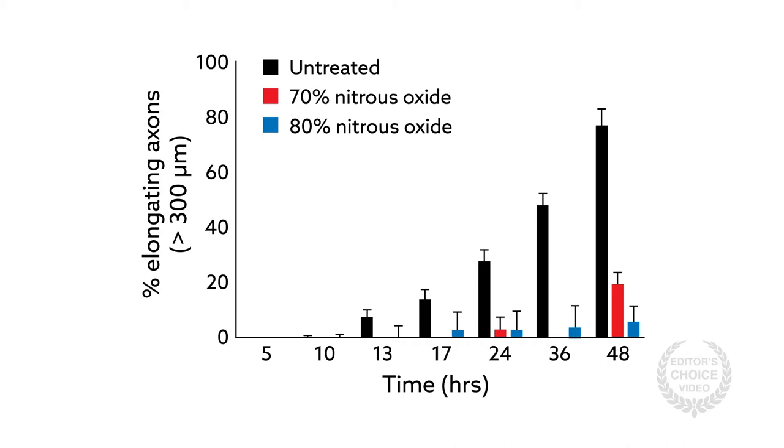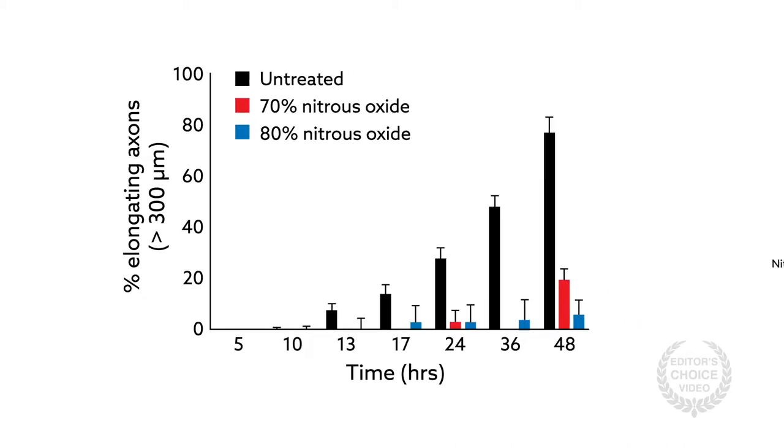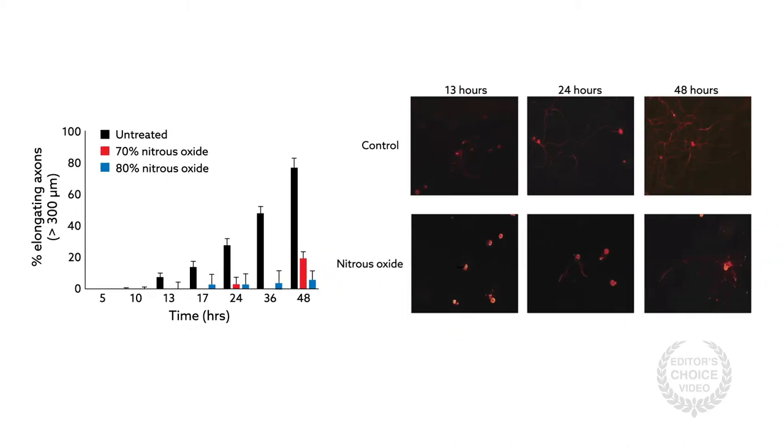All experiments showed that nitrous oxide reduced the amount of axonal recovery following an injury. In cell culture, dorsal root ganglion neurons did not extend axons as far after either single or multiple nitrous oxide administrations.